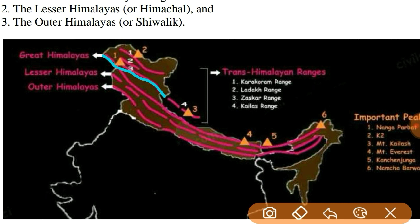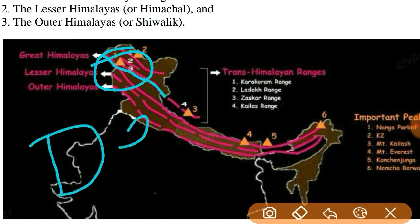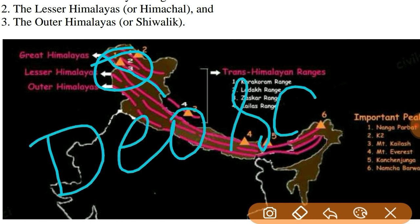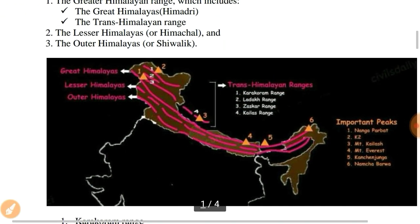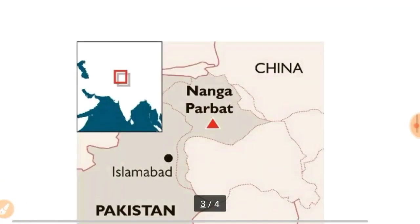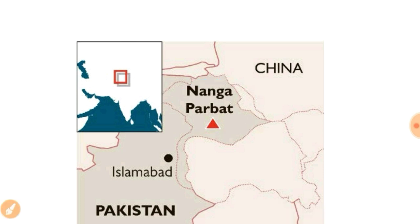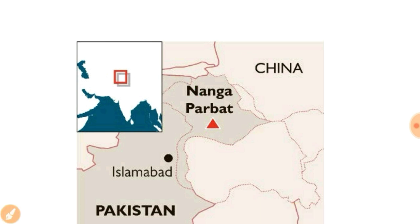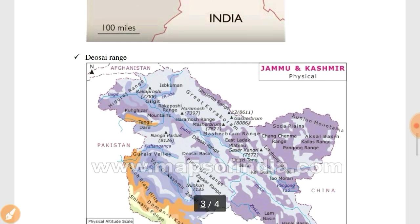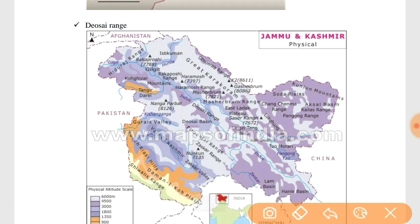We can find Nanga Parbat in the Zaskar range. There is also one more range here known as the Deosai range, which is also within the Zaskar range. As shown in the separate map, Nanga Parbat is in the Zaskar range and the Deosai range is also located within the Zaskar range.